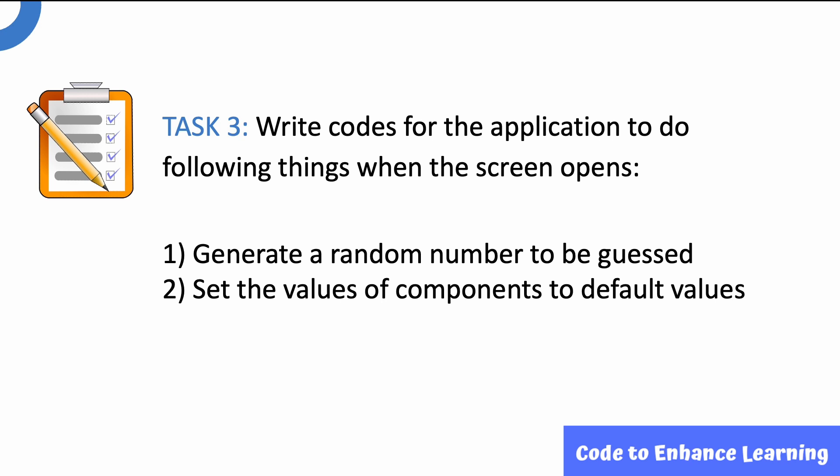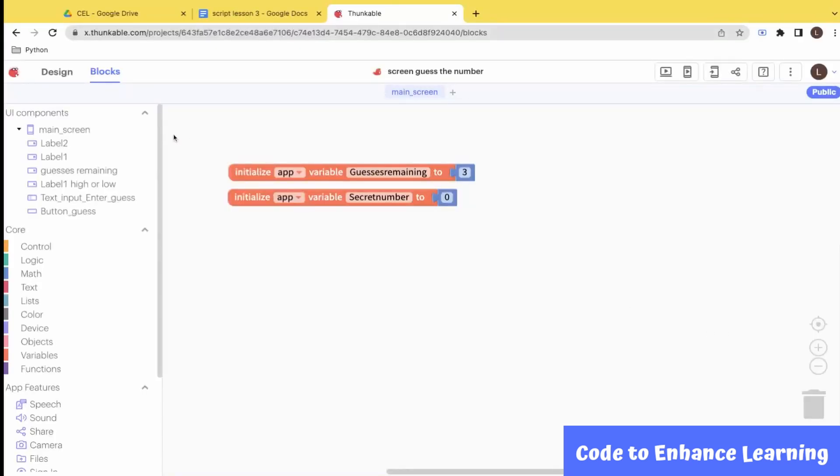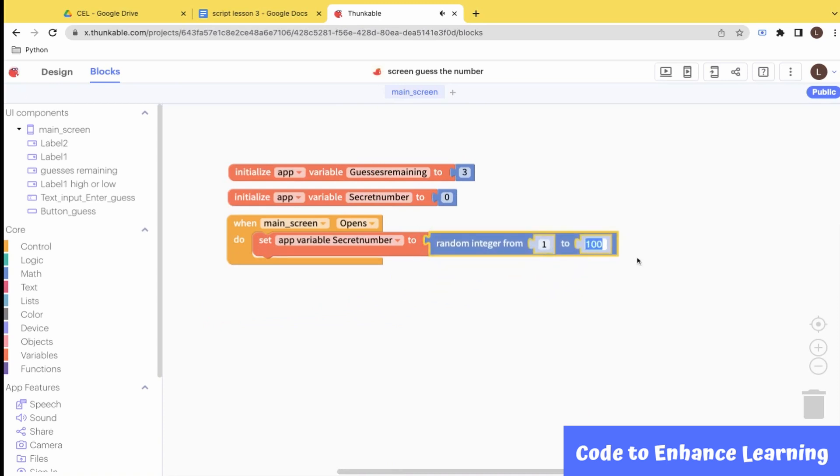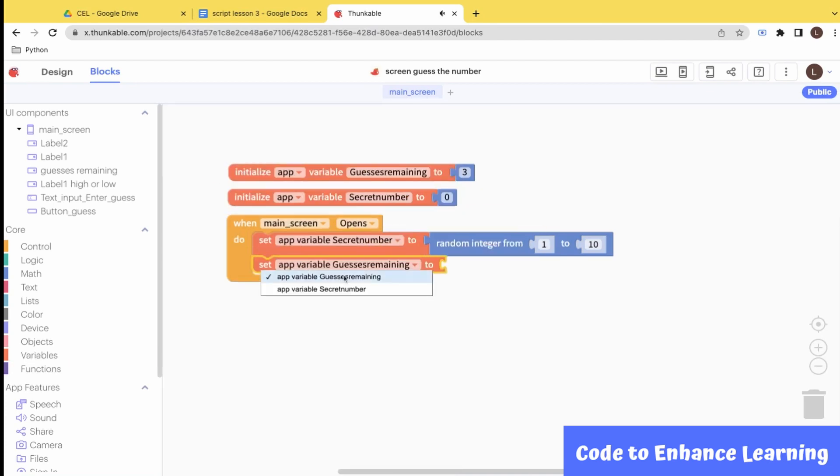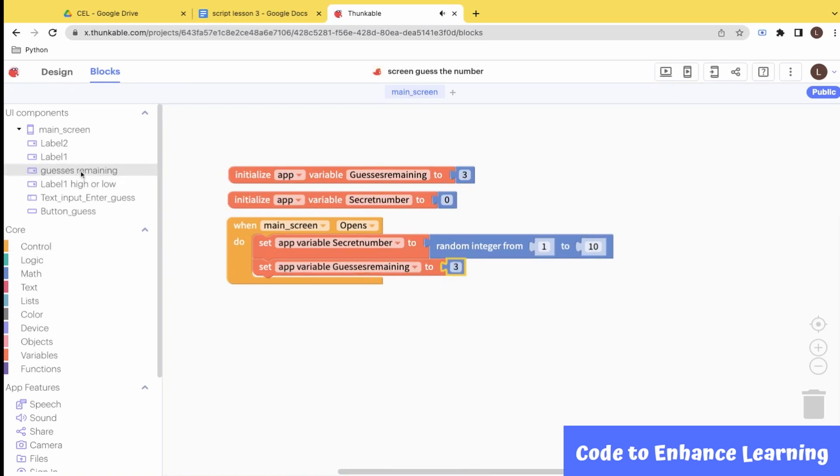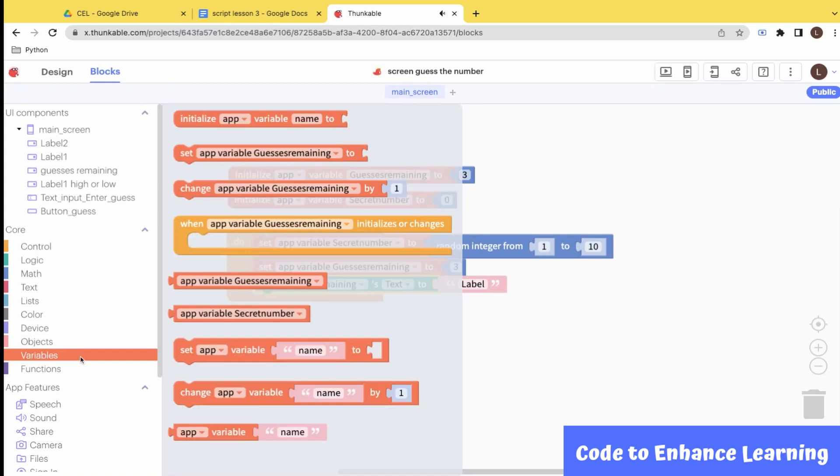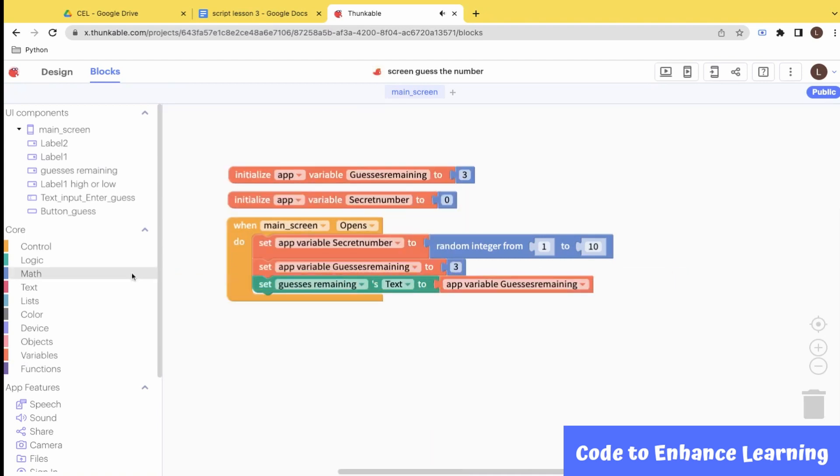This brings us to Task 3, where you have to write codes for the application to do the following things when the screen opens: generate a random number to be guessed, set the values of components to default values. Now we will see what happens when the main screen opens. When the main screen opens, we will set the value of secret number to be a random integer from 1 to 10. We will also set the value of guesses remaining to be 3. The text in the label guesses remaining will be equal to the guesses remaining variable. We will also set the high or low label's text to be a default text and the enter guess label will also be set to a default value.